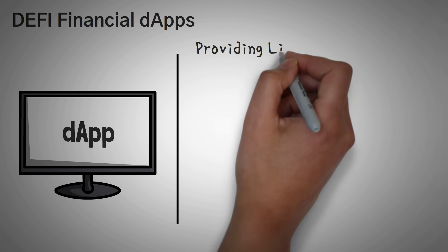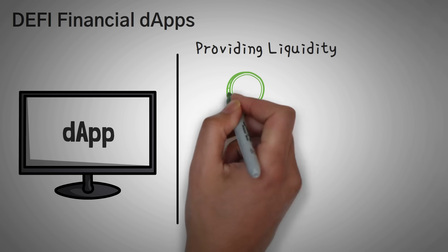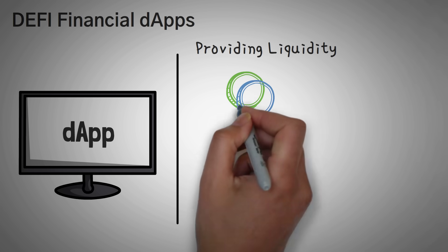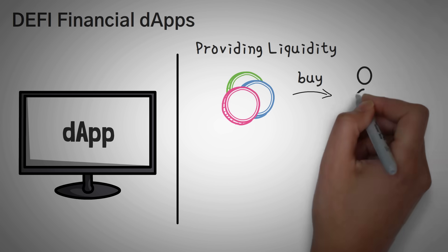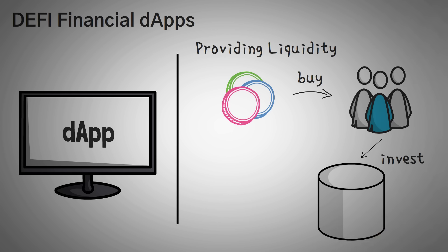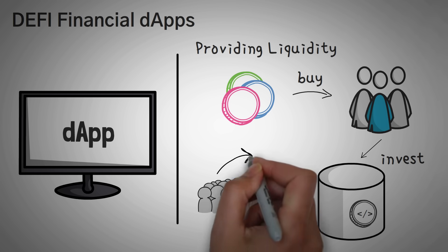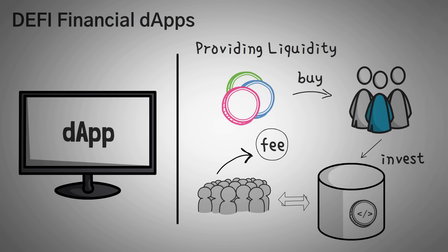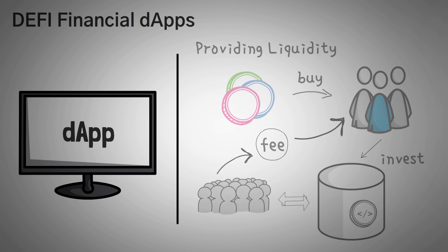Number two is providing liquidity. In short, there is not much money in the tokens out there to trade, so investors can come along, buy these tokens, and invest them in what is called a liquidity pool, which allows other people to trade back and forth using their tokens. The traders pay a small fee that allows the investors to earn a return for their investment. It's a win-win situation.